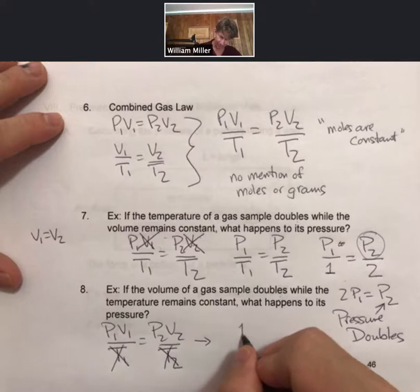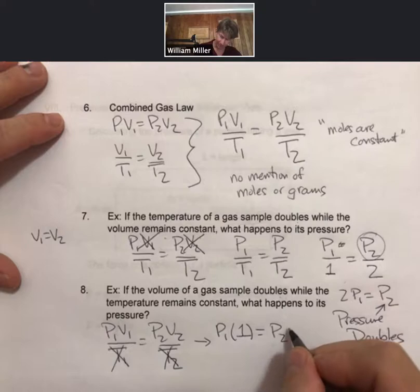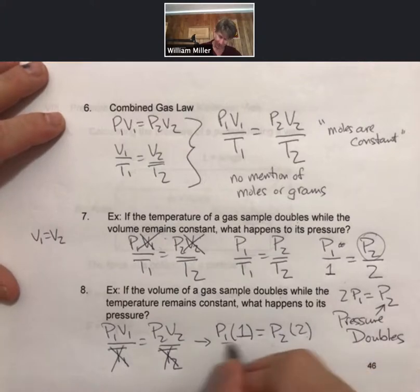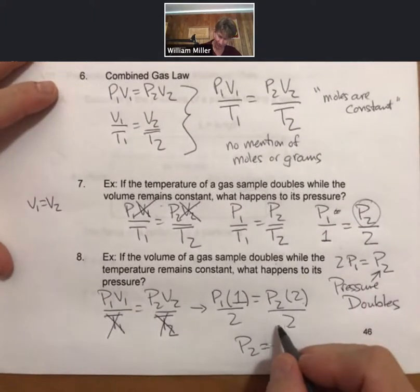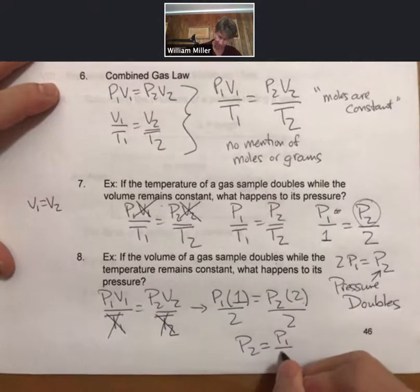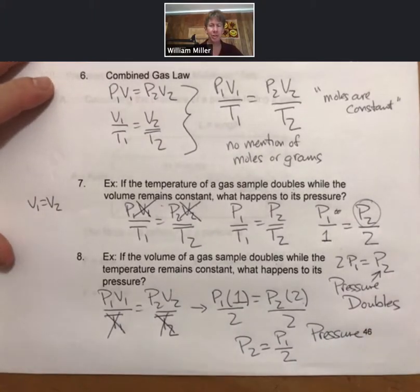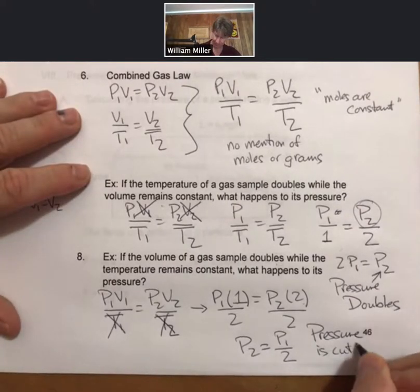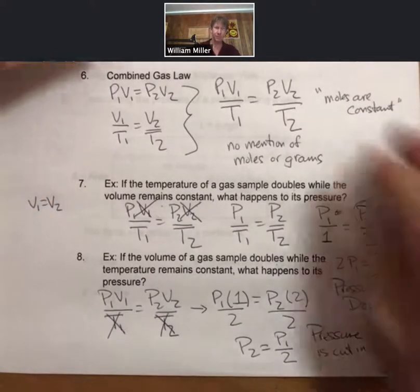so V1 we're going to call 1. V2 we're going to call 2, so volume has doubled. And now P2 equals P1 divided by 2, so pressure is cut in half.